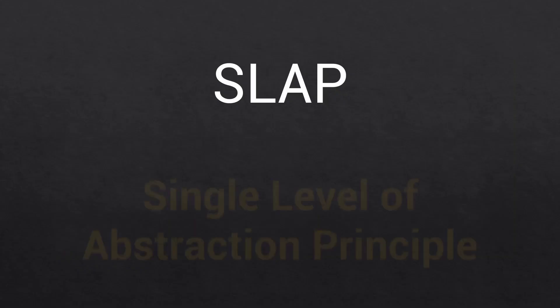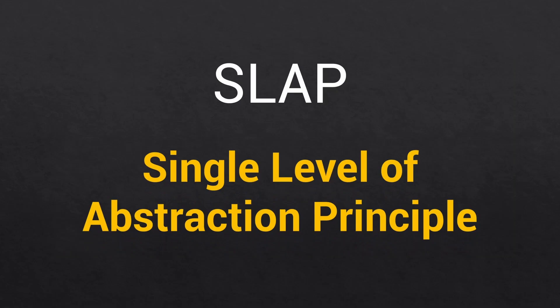Moving on. SLAP stands for single level of abstraction principle. SLAP suggests that we should write each method with a single level of abstraction, and that just means that a method should deal either with high-level operations or low-level operations, but not at the same time. Low-level operations are code that is really close to the hardware. Anything that deals with things like network infrastructure or database calls, that is low-level, whereas high-level operations might be business logic. By keeping the code to a single level of abstraction and a single level of detail, this keeps things modular and easy to maintain.